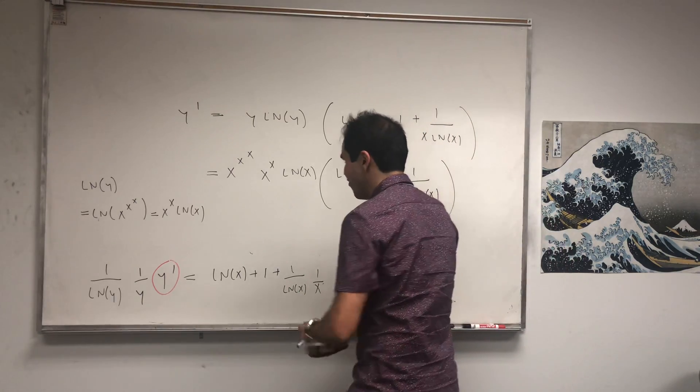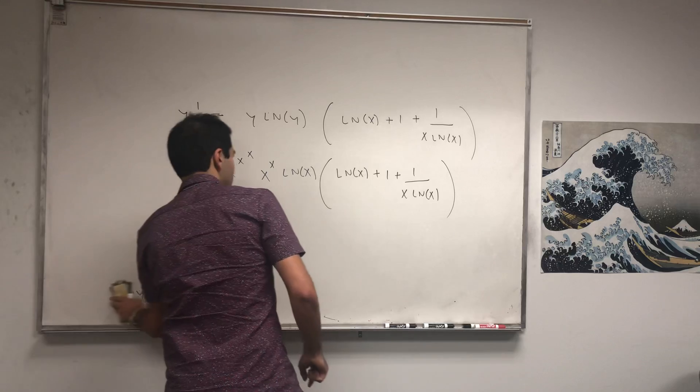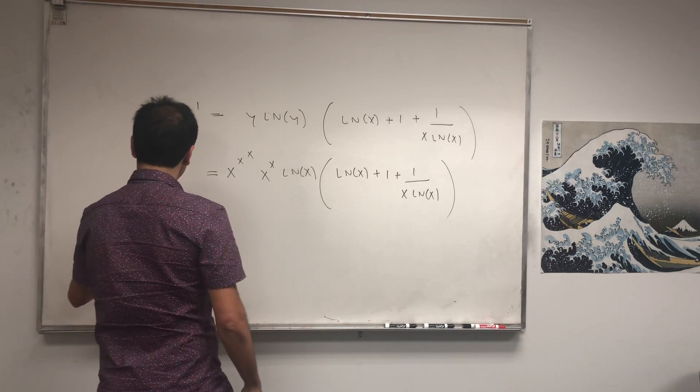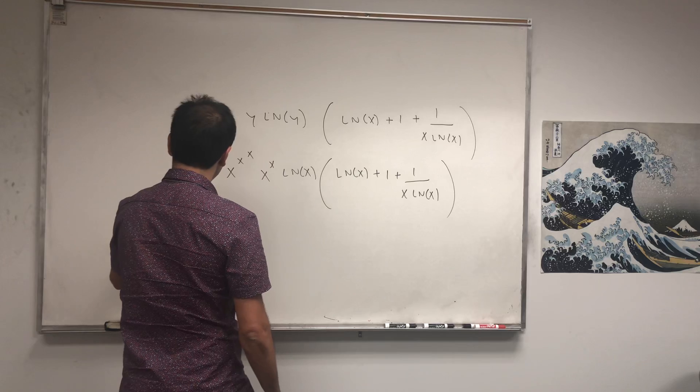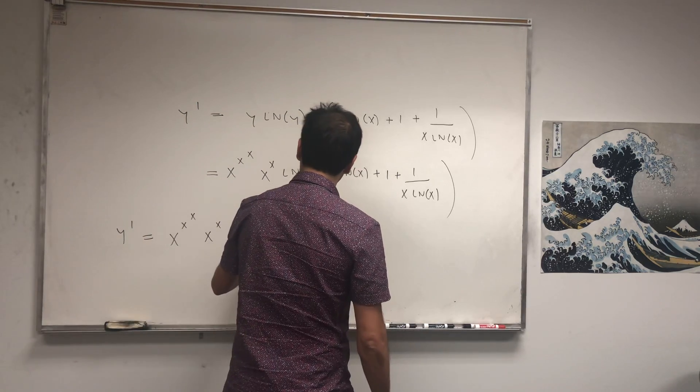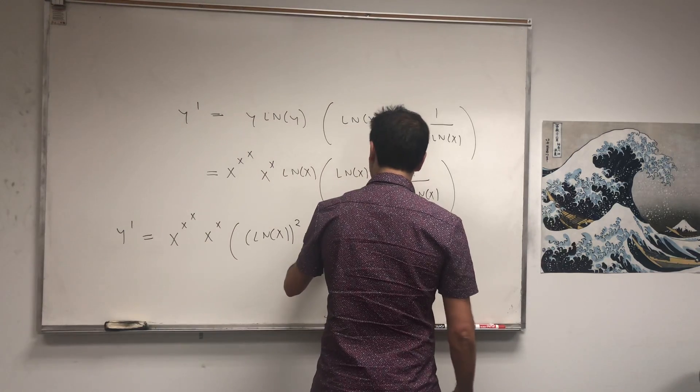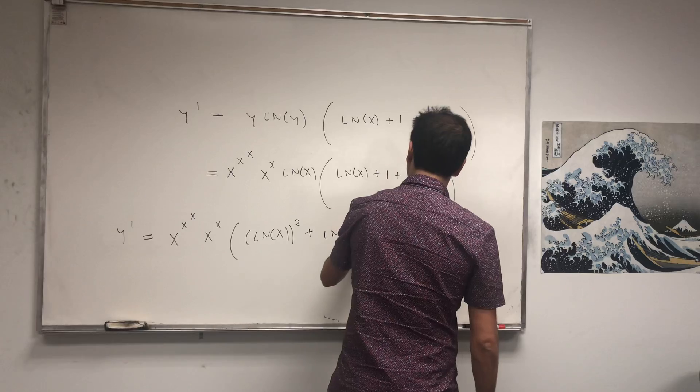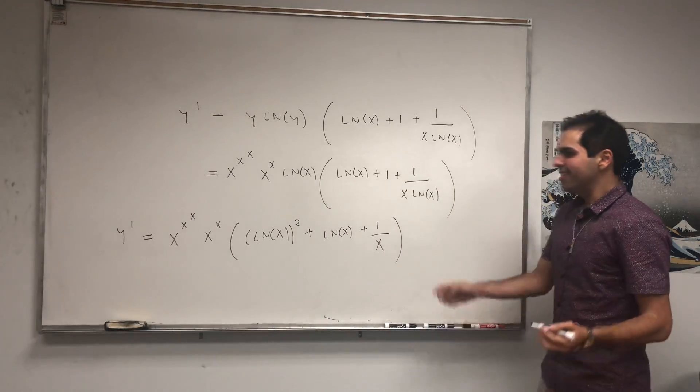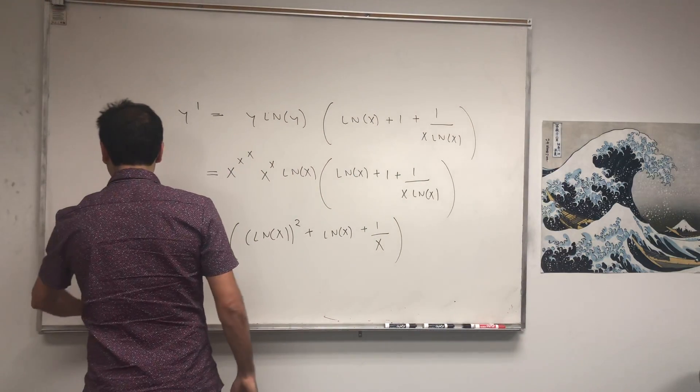Well, so we get y prime equals to x to the x times x to the x times, if you want, ln of x squared, plus ln of x, plus 1 over x. And so, in the end, this gives you the derivative of x to the x to the x.